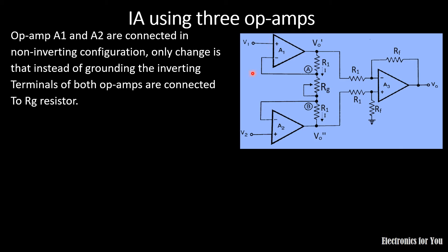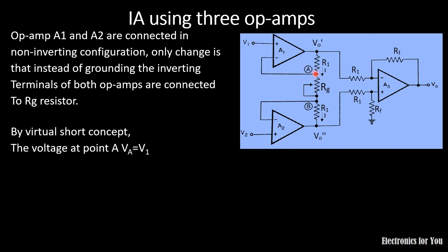As this is a non-inverting amplifier, we will use the virtual short concept. As per the virtual short concept, the voltages at the inverting and non-inverting terminals are the same as the applied voltage. Therefore, the voltage at point A, that is VA, is equal to V1. Similarly, the voltage at point B, that is VB, is equal to V2. Now to find Vo' and Vo double dash, we will find the current I.